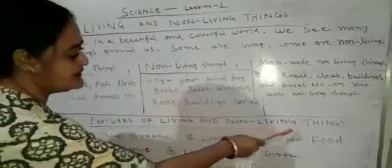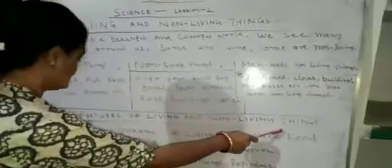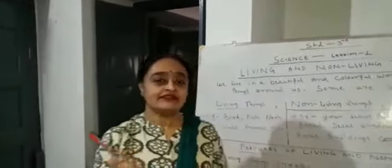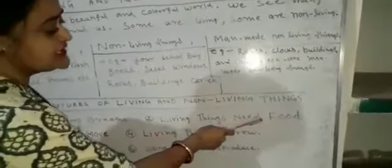Now let us look at the features of living and non-living things. Living things breathe — they need air to breathe — whereas non-living things do not breathe. Next, living things need food to grow and live, whereas non-living things do not need food.